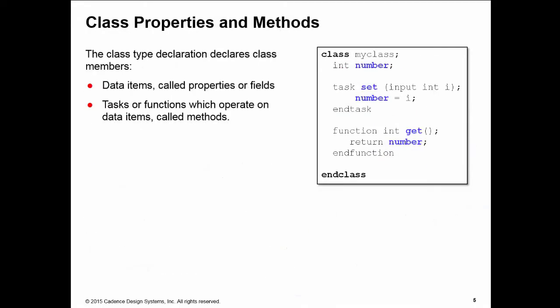Let's talk a little bit about terminology. Your class type declaration declares class members, and these include data items, called properties or fields of the class, and also tasks and functions, which we call the methods of the class.